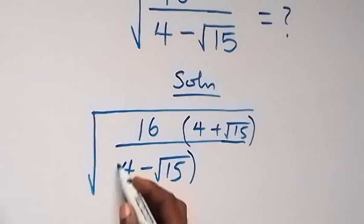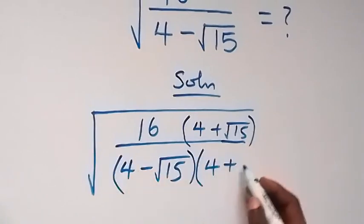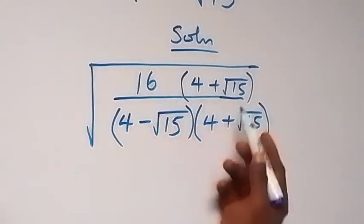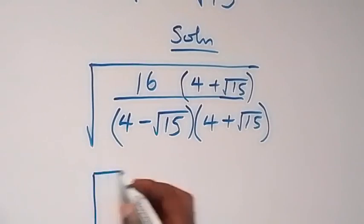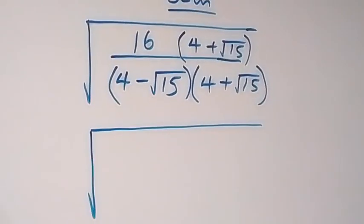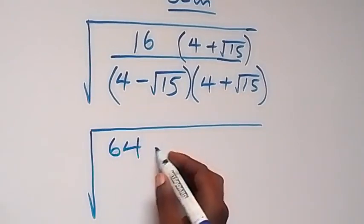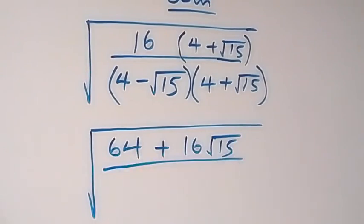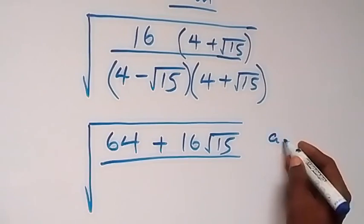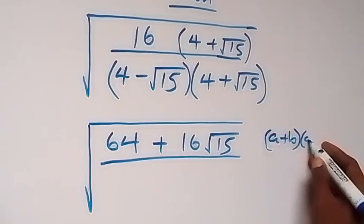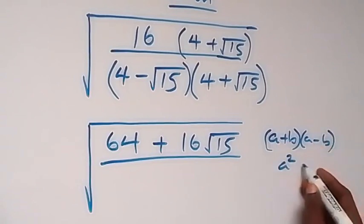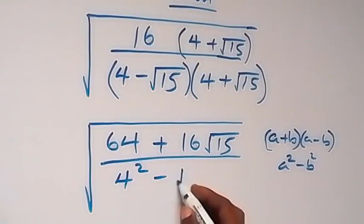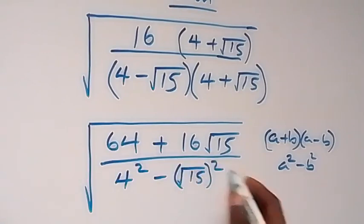We multiply by 4 plus root 15 in both numerator and denominator. When 16 multiplies with the bracket, this gives us the square root of 16 times 4, which is 64, plus 16 root 15. The denominator is in the form of conjugates: (a + b)(a − b) = a² − b², so we have 4² minus (root 15)².